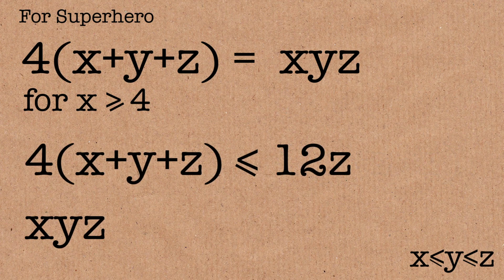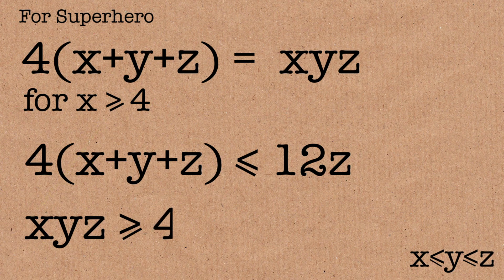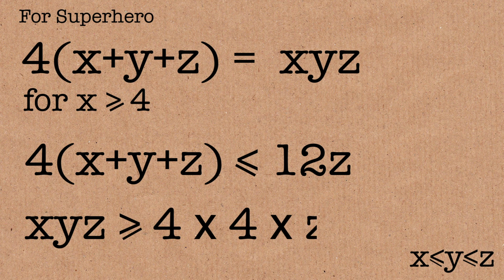And on the right-hand side, x, y, z, it's going to be bigger than x is bigger than 4, so we can say it's bigger than 4, y is bigger than 4 as well. So it's bigger than 4 times 4 times, let's have z here, because that will be 16z.